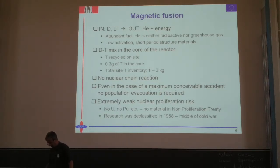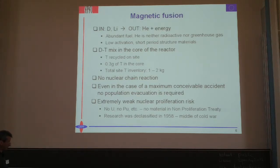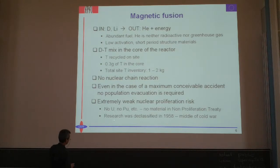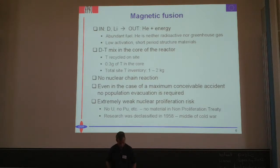There is also an extremely weak nuclear proliferation risk. None of the materials that go into building a magnetic fusion reactor is a material which has an entry in the non-proliferation treaty. Another convincing argument is that this type of research was declassified in 1958, in the middle of the Cold War. So if there were any chance that this research would have some nasty impact on nuclear proliferation, I think it would not have been declassified, especially in those days.